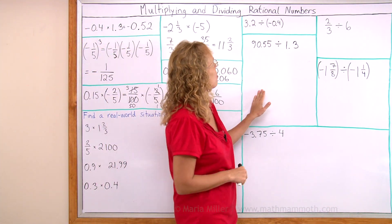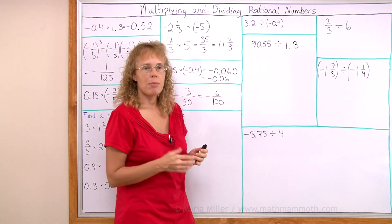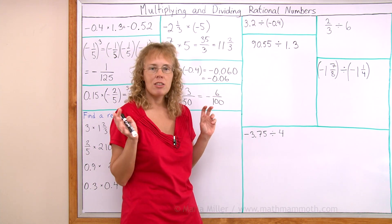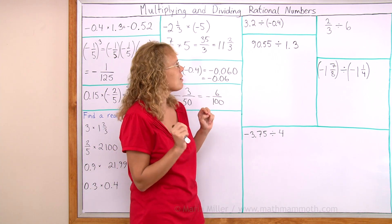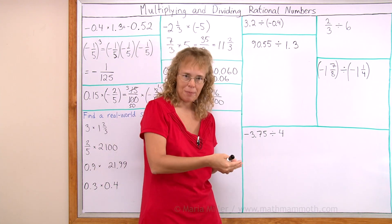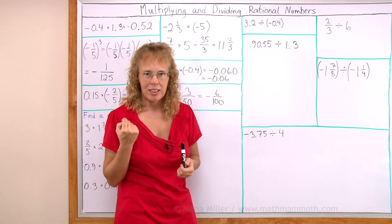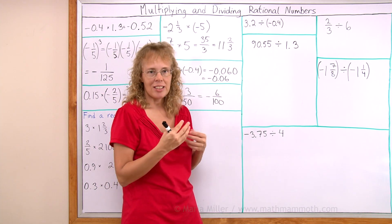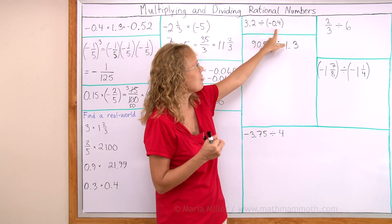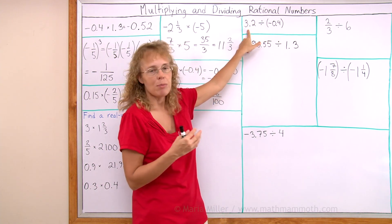And now let's solve some more problems. 3.2 divided by negative 0.4. Okay, again, first ignore the negative sign and think of it as 3.2 divided by 0.4. There's a mental math trick to that because those numbers behave nicely. This one goes evenly here. How many times does 4 tenths go into 3.2?